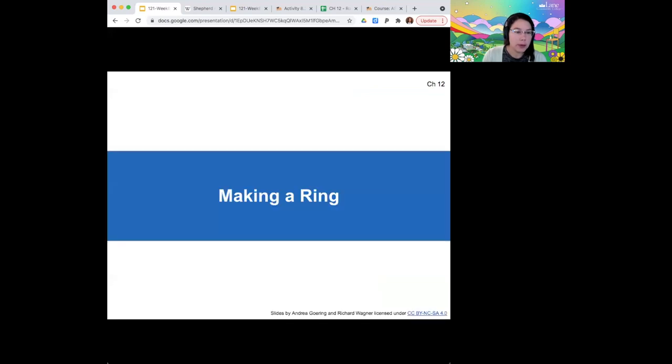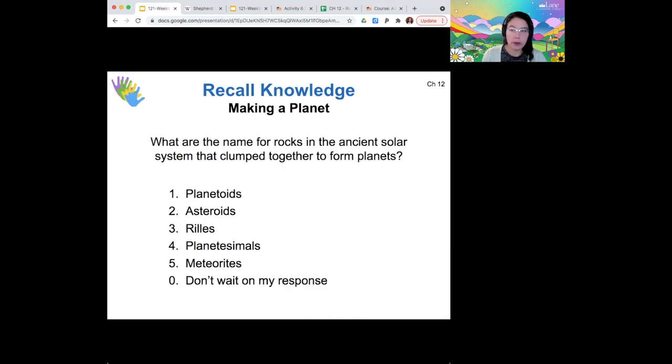All right. I want to explore how rings are made. So coming back to what we know about how planets were made, what was it called when rocks in the ancient solar system clumped together to form planets?